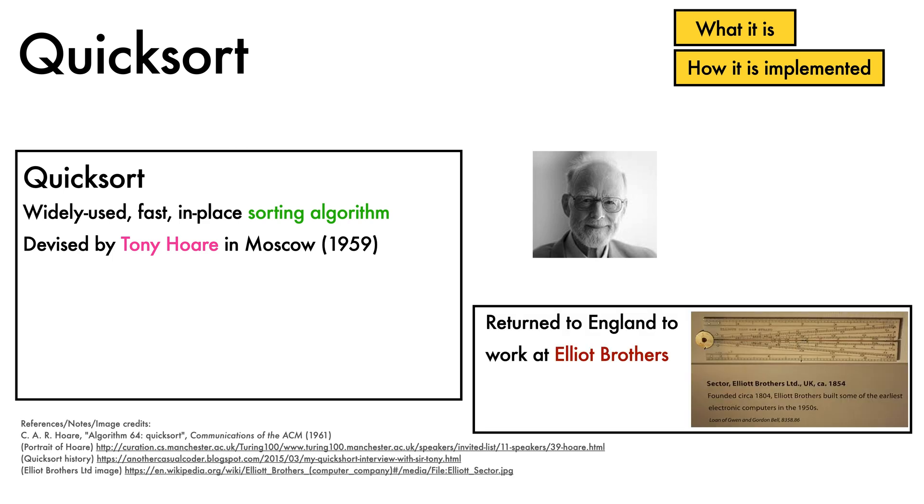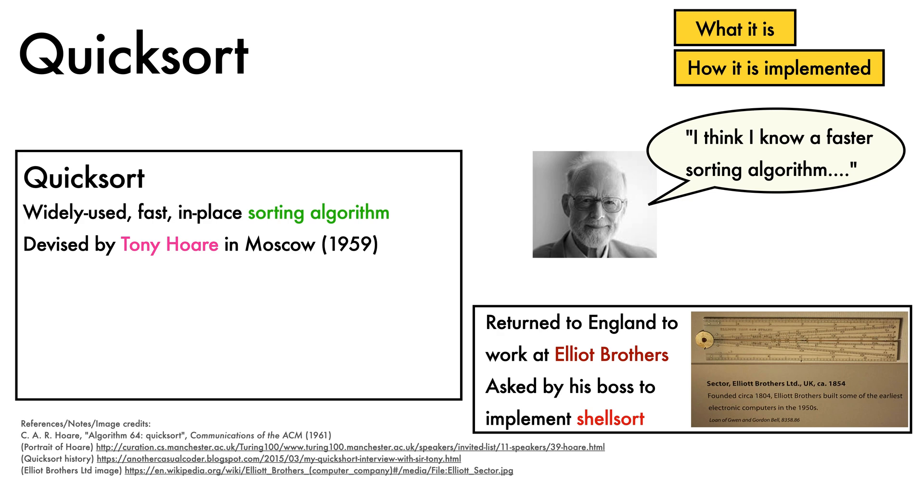On his return to England, Hoare joined a computer manufacturer called Elliot Brothers, where he was asked by his boss to implement ShellSort. Hoare suggested that he knew of a newly devised algorithm that might be faster than ShellSort, which led to a wager with his boss, who bet that he didn't.